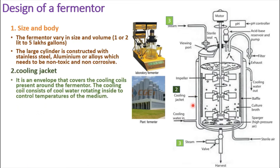The second component is the cooling jacket. This cooling jacket is a cover that covers the cooling coils present around the fermenter. The cooling coil has a supply of cool water circulating inside to control the temperature of the medium, because during the metabolic process heat is generated and that has to be controlled.